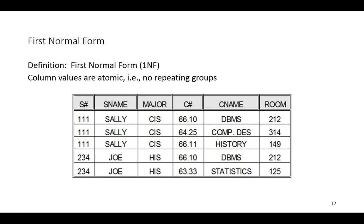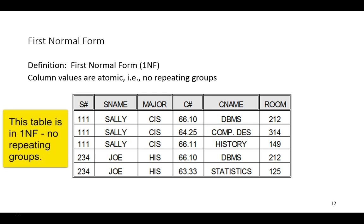Each course registration is indicated by a separate row. If there were a repeating group, then a single column within a row would have included multiple values — all three of these values. That goes against our notion here of disallowing repeating groups. In order to achieve first normal form, it's as simple as being able to present all data in a table with atomic values for each column. Thus, this table gives us first normal form.